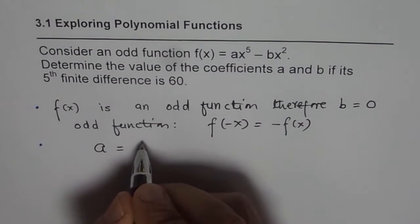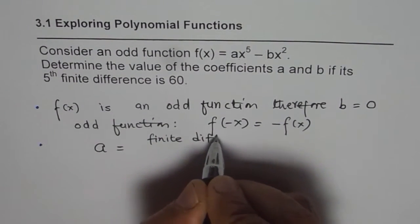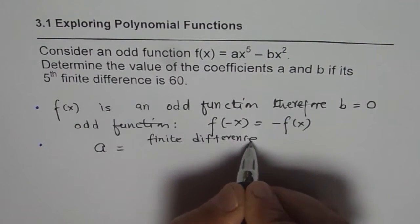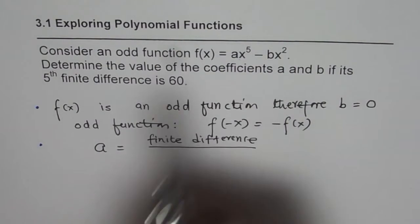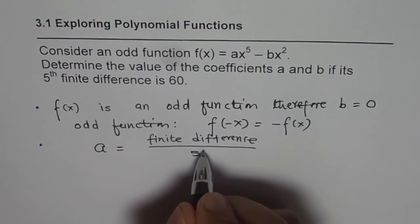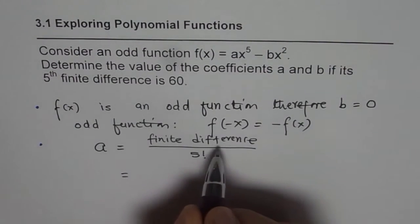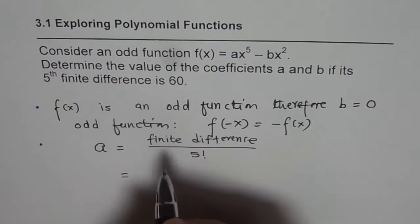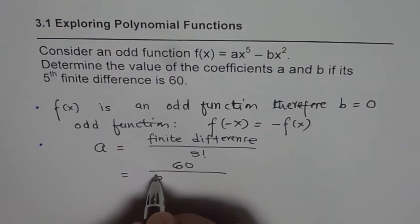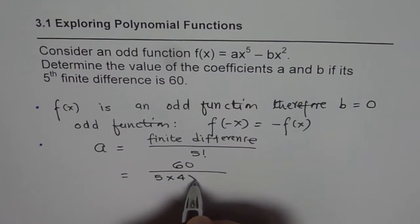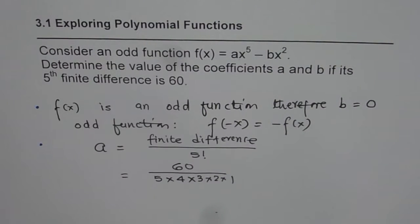It is finite difference over degree factorial. So it is 5th finite difference over 5 factorial. 5th finite difference is given to us as 60. So it is 60 over 5 factorial, which means 5 times 4 times 3 times 2 times 1. That gives us the answer.